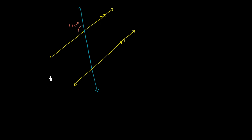Well, the first thing that we might realize is that corresponding angles are equivalent. This angle — the angle between this parallel line and the transversal — is going to be the same as the angle between this parallel line and the transversal. So this right over here is also going to be 110 degrees.